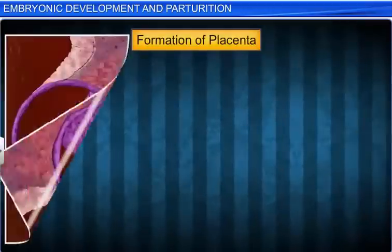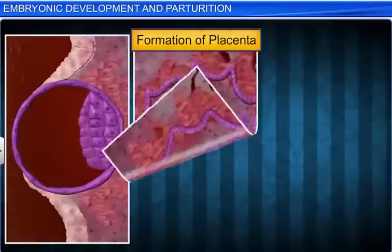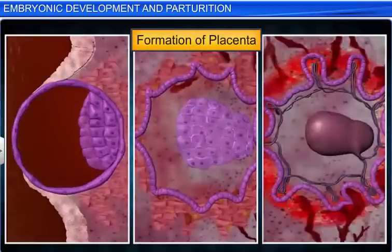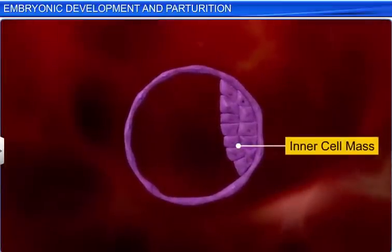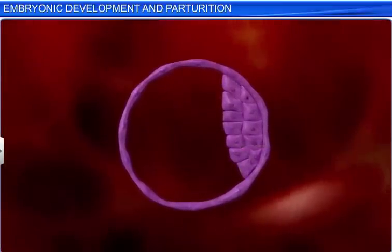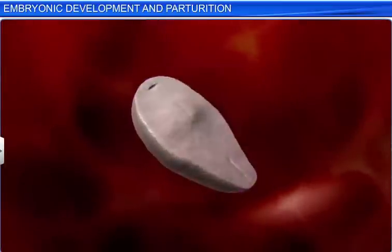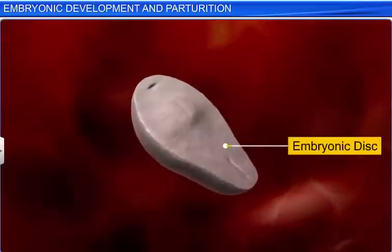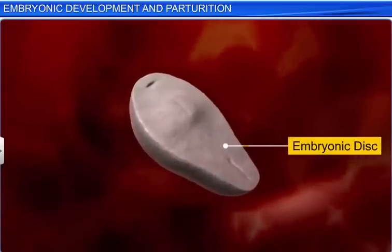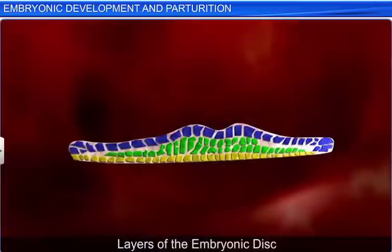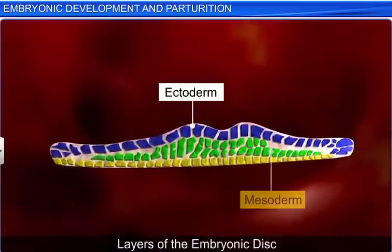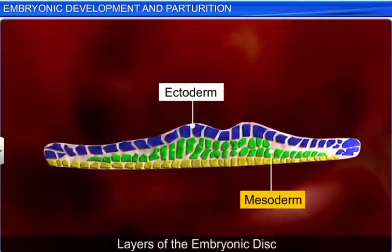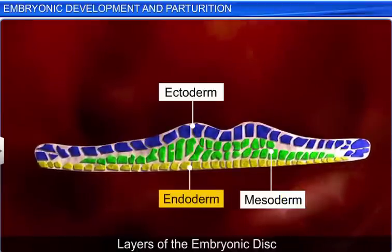Interestingly, when the placenta begins to form, the inner cell mass moves downwards and differentiates to form an embryonic disc consisting of three germ layers: the outer ectoderm, middle mesoderm, and inner endoderm.